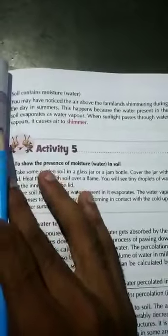Soil contains moisture. We have heard that air above the farmlands shimmers during the summer days. This happens because the water present in the soil evaporates as water vapor. When sunlight passes through the water vapor, it causes shimmer.